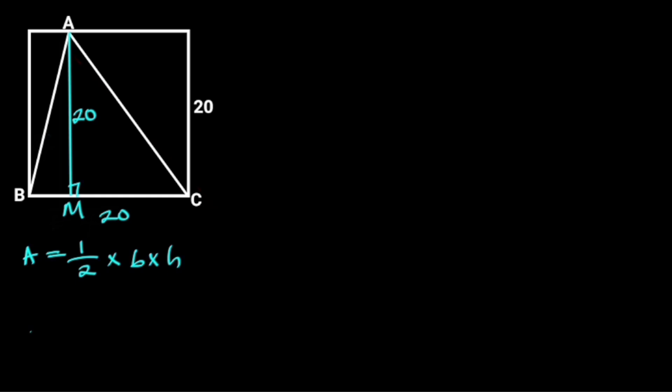Since the base of triangle ABC is 20 units and the height 20 units, it follows that the area of the triangle is 1 over 2 times 20 times 20.